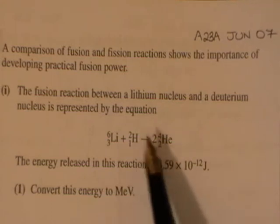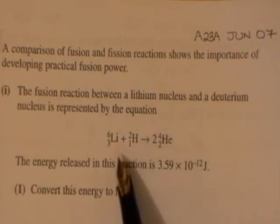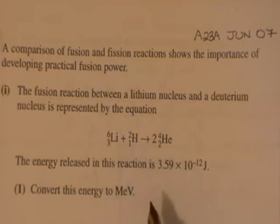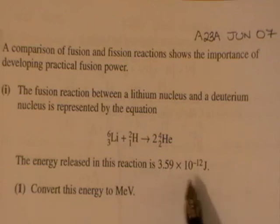We're told that the fusion reaction between a lithium nucleus and a deuterium nucleus is represented by the equation given: lithium plus hydrogen goes to 2 helium. The energy released is 3.59 times 10 to the minus 12.